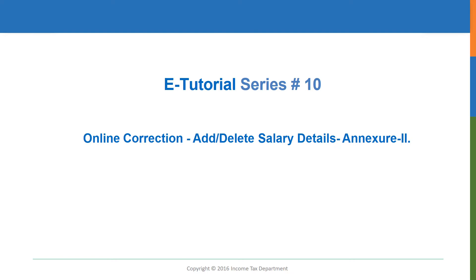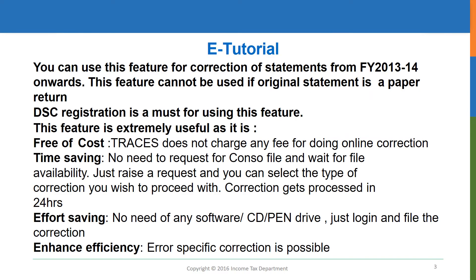This feature is useful in making necessary corrections if in the original statement you have entered wrong salary details of your deductee, as a result of which defaults like short deduction, short payment, wrong tax credits to employees, etc. have occurred. You can use this feature for correction of statements from financial year 2013-14 onwards. This feature cannot be used if the original return is a paper return, and TRACES registration is a must for using this feature.